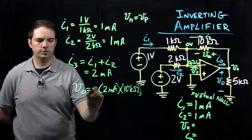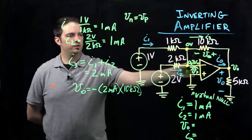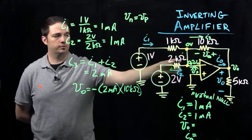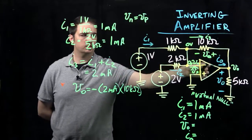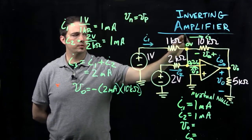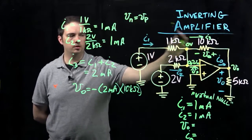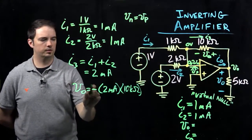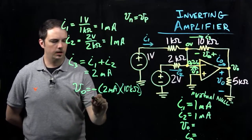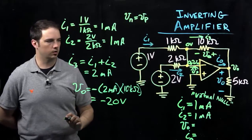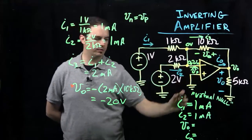If I know the current traveling through that 10 kiloohm resistor, I can figure out that voltage V0 is going to be the current 2 milliamps times the resistance 10 kiloohms. But this will be actually negative because of how we've defined the voltage across that resistor, from negative to positive, opposite to the expected drop. So we have negative 20 volts for our output V0.